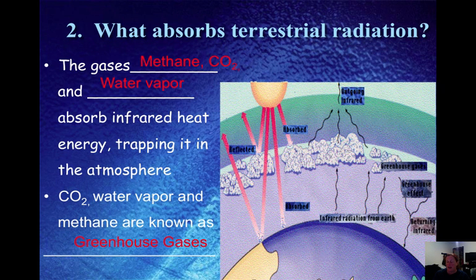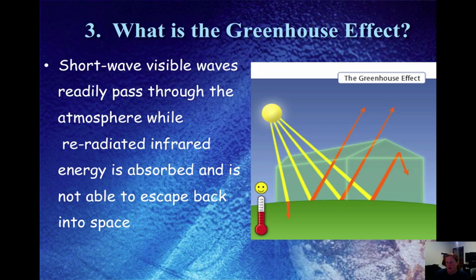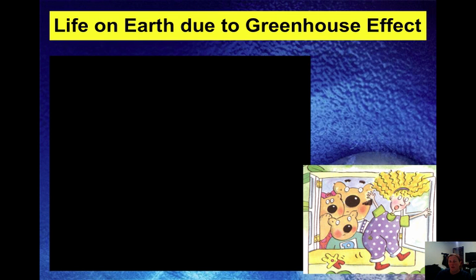Without greenhouse gases, Earth's heat would be re-radiated back into space, and Earth would not be able to maintain the temperature that we all know. The greenhouse is used as a model for how the atmosphere works. The glass of the greenhouse represents Earth's atmosphere, which allows the shorter wavelengths to pass in, but does not allow the longer infrared wavelengths to pass back out. Shortwave visible waves pass through, but the re-radiated infrared is trapped, heating up the greenhouse — the same way Earth is reheated.